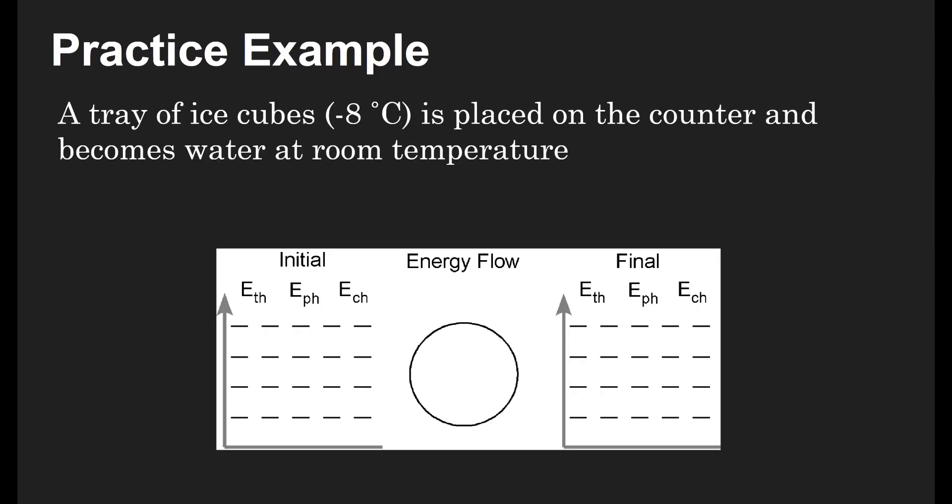All right, so we're going to do a practice one. A tray of ice cubes that's at negative eight Celsius is placed on the counter and becomes water at room temperature. So this would be a good place to pause and try to do this yourself. I'll give you some time. All right. So our system here is going to be the ice cubes. And the phase for it starts as a solid because ice cubes are solids. That's one bar for solid. And then it ends as a liquid. So that's going to be two bars for the phase for liquid.